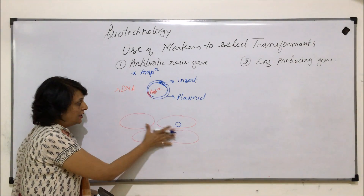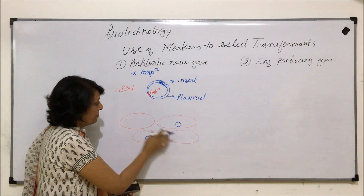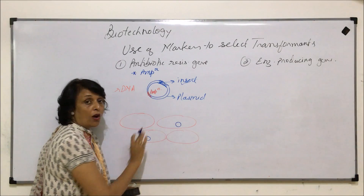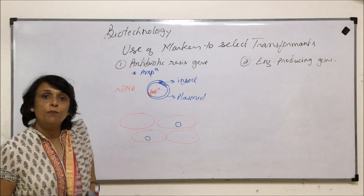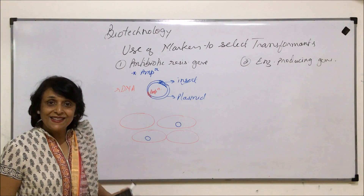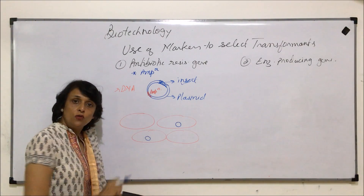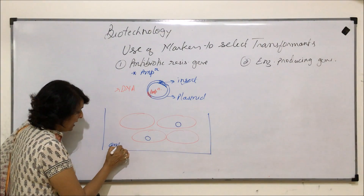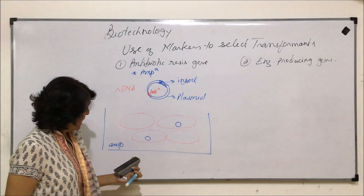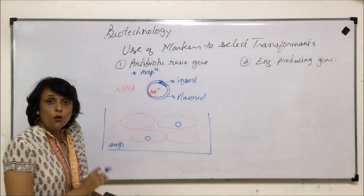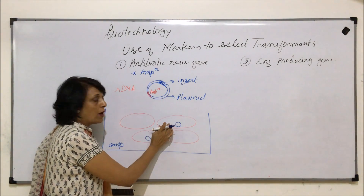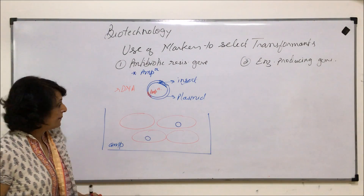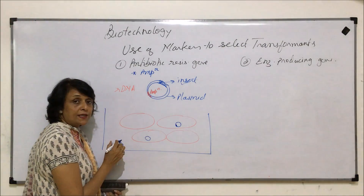If we cultured these E. coli, 50% are not going to produce anything for us because the insert has not gone in. To get rid of the non-transformants, we will grow them in a culture medium containing ampicillin. We know why we use ampicillin — because if our R-DNA has gone in, along with the insert, the ampicillin resistance gene has also gone in.